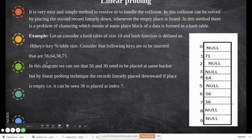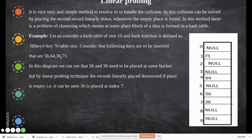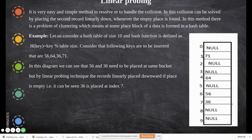In linear probing, consider keys 56, 64, 36, and 71 with hash function key mod table_size, where table size is 10. 56 mod 10 = 6, so 56 is stored at index 6. 64 mod 10 = 4, so 64 is stored at index 4. 36 mod 10 = 6, but index 6 is already taken, so 36 is placed in the next free location, index 7. 71 mod 10 = 1, so 71 is stored at index 1.